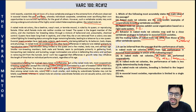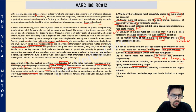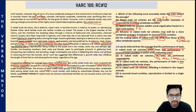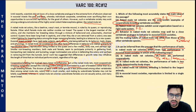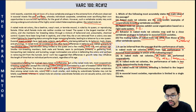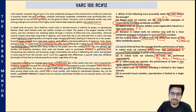Option B: in naked mole rat colonies, the performance of tasks is less rigidly determined by body shape. In eusocial insect societies, behavior, body shape, and physiology are important factors in division of labor. On the other hand, in naked mole rat societies, division of labor happens primarily on the basis of reproductive status, body size — not body shape — and perhaps age. So clearly, in naked moles, the performance of tasks is less rigidly determined by body shape. Option B should be the correct answer.